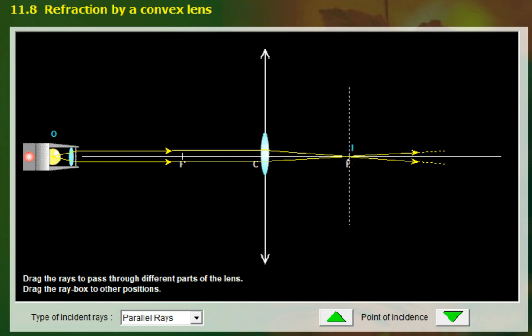And you should know that the distance between the focal point F here to the optical center, the center of the lens, that distance is known as the focal length of the lens.